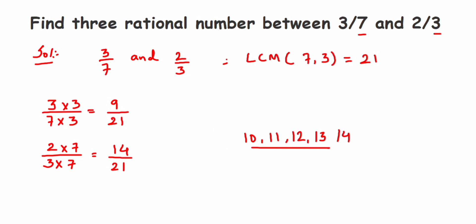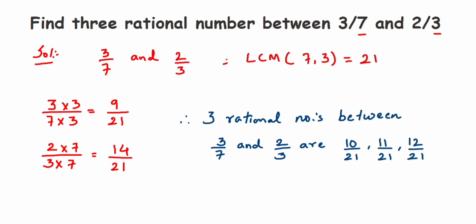Therefore, three rational numbers between 3/7 and 2/3 are: I'm going to take 10/21, then 11/21, and then 12/21. You can take 13/21 also, but don't include 9 and 14 - they're asking between them.